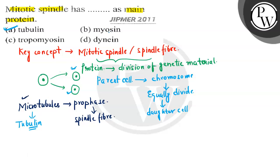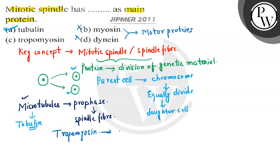Looking at the other options: myosin and dynein are examples of motor proteins, so both of those options are incorrect. Tropomyosin plays an important role in muscle contraction and muscle relaxation, which is why it is considered a muscle protein — so option B and C are also incorrect. From all of this, we confirm that the correct answer is option A: tubulin is the main protein that forms the mitotic spindle or spindle fiber.